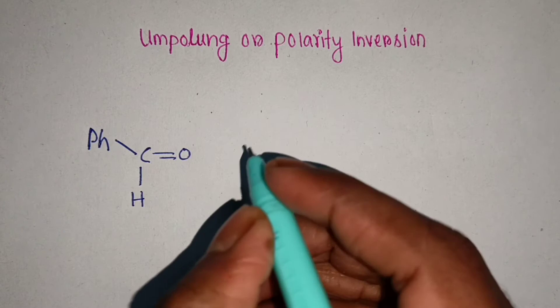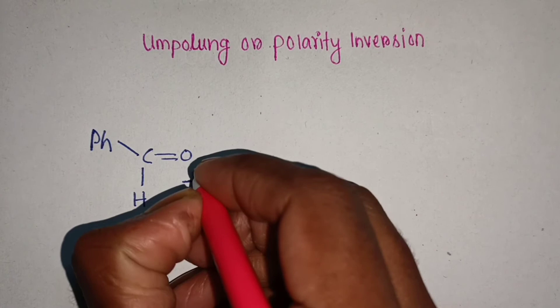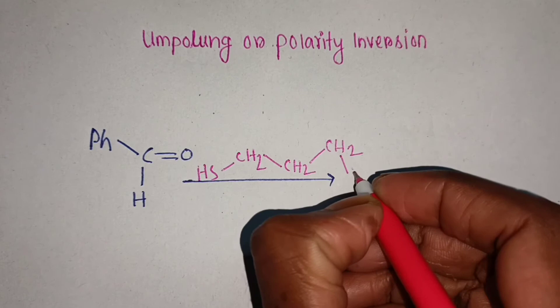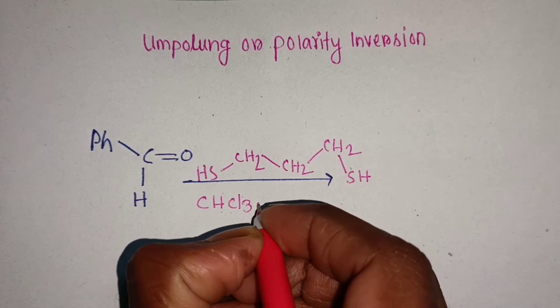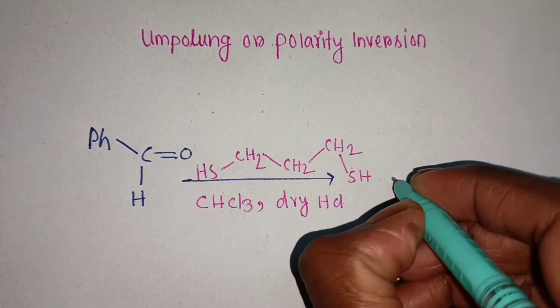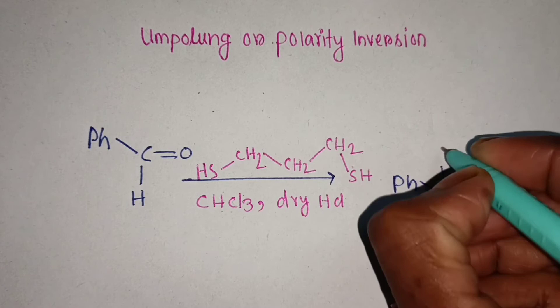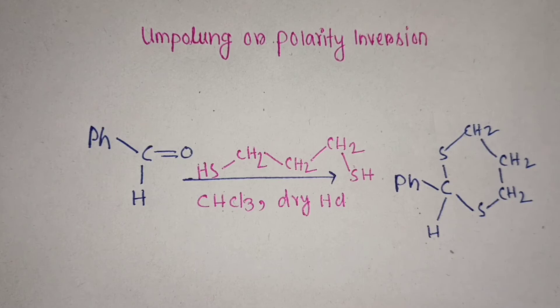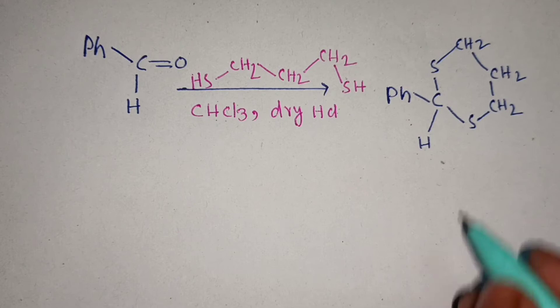This is benzaldehyde, and that is chloroform and dry HCl, and we will get a structure with sulfur-CH2-CH2-CH2-CH2.